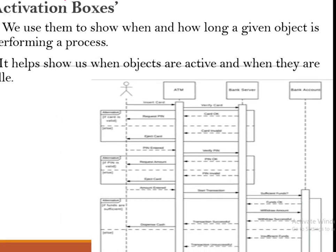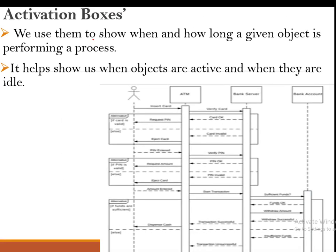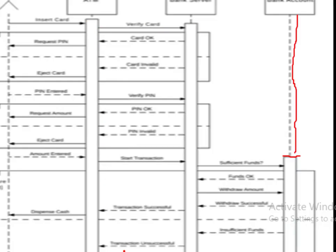An activation box shows how long an object was involved in the performance of a given process. The bank account was only active from the point of verifying sufficient funds — it was dormant before that. For the ATM and bank server, the interaction began right from the top, so the activation box is drawn from the start. Activation boxes help us know when a given object is active and when it is idle.